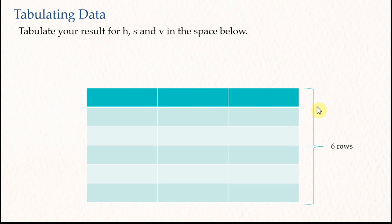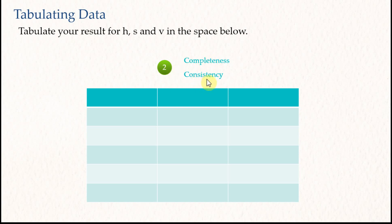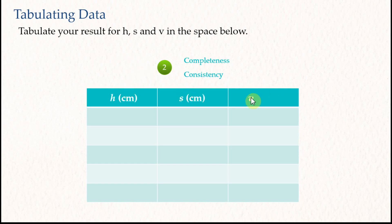For the table, you're going to get two marks if you do it correctly, based on the completeness and the consistency of the data. For completeness, the table must have the title and the unit of each variable. In this case we have H, S, and V — H is the height with the unit in cm, and S is the length also in cm.